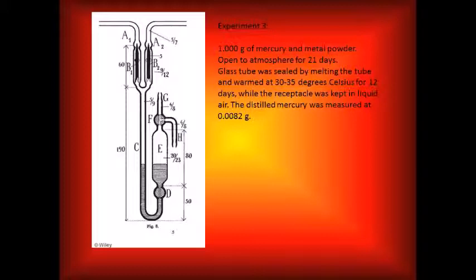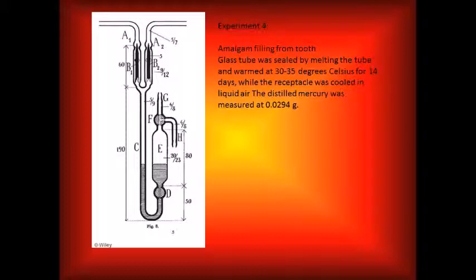In experiment three, it followed the same procedure as experiment two, but used one gram of mercury instead. The mercury was measured at 0.0082 grams.